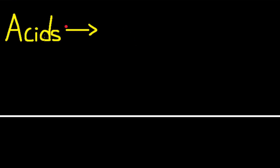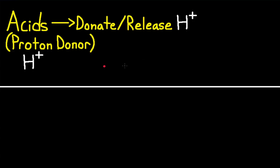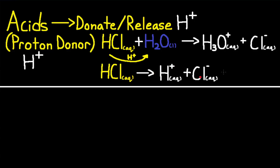Brønsted-Lowry acids donate or release H⁺ ions, or hydrogen ions. So in a reaction, acids are considered proton donors where H⁺ is the proton. For example, HCl is an acid, so it donates its H⁺ ions to H2O, producing H3O⁺ (hydronium ion) and Cl⁻. This reaction can also be written without the water as HCl dissociating into H⁺ and Cl⁻, since H⁺ is basically the same as H3O⁺.